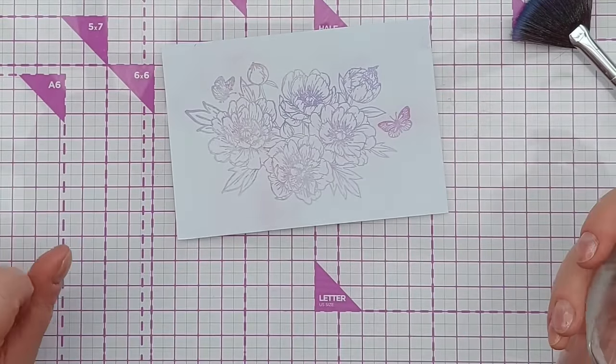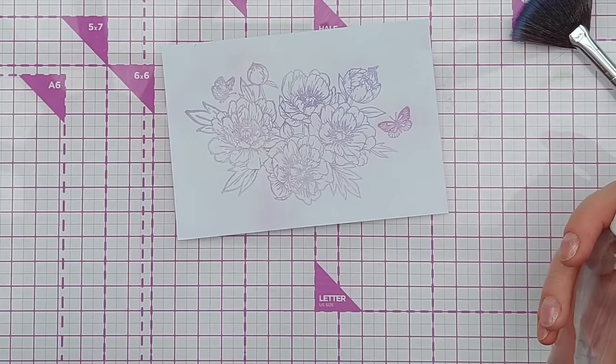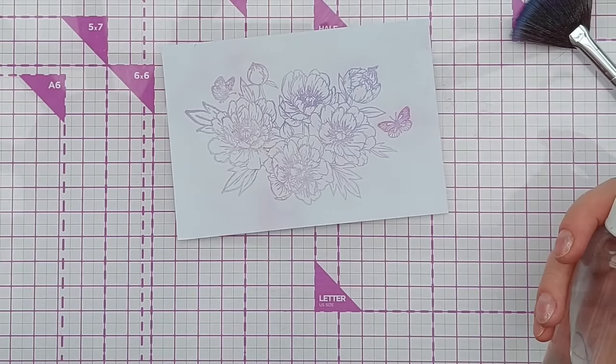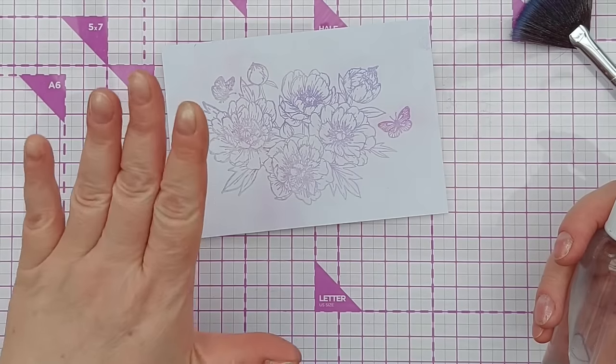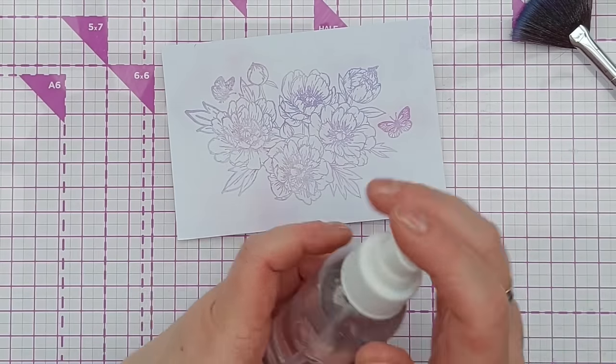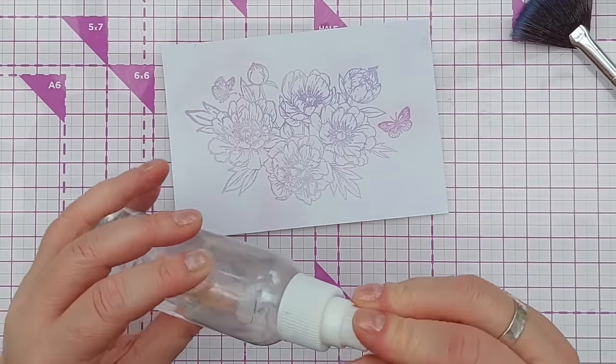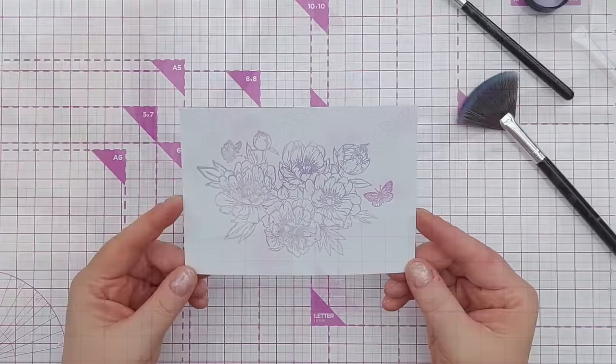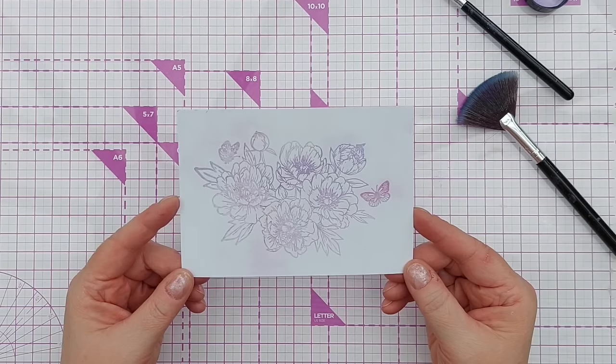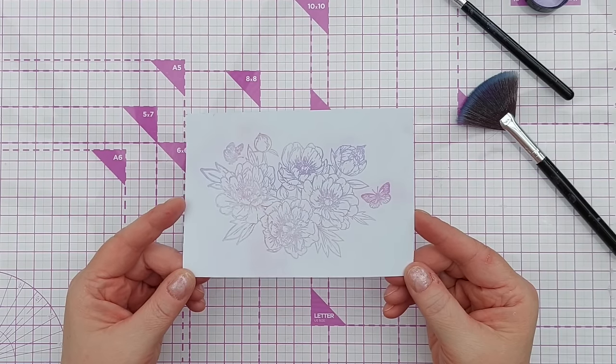And what I'd normally do now is give that a light misting with water to activate the binder in the Luscious Powder to make it bind to the paper. But unfortunately I just dropped this on the floor and the top has snapped off, so now I can't spray anything. So that's technique number one: brush dried pigment powder over an image stamped with embossing ink.